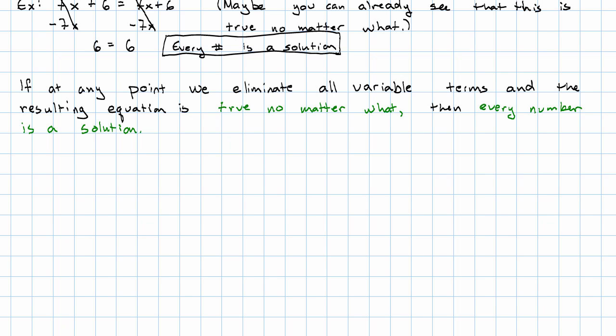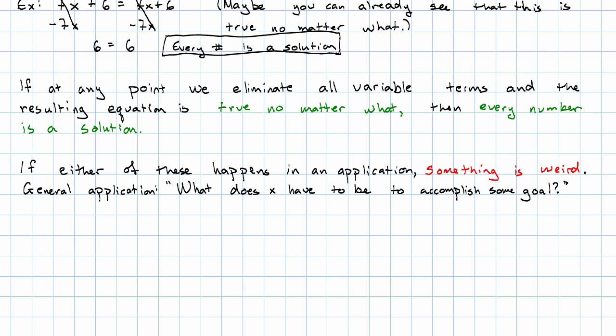If either one of these happens in an application problem, something weird has happened. Well, most applications we're saying, what does x have to be in order to accomplish some goal?